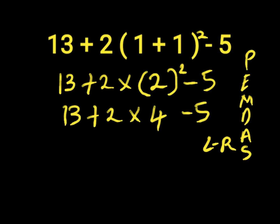Then we have 13 plus 2 times 4 minus 5. We solve multiplication first because it comes before addition and subtraction. So, our multiplication is 2 times 4. 2 times 4 will give us 8. Then we put down 13 plus 8 minus 5.